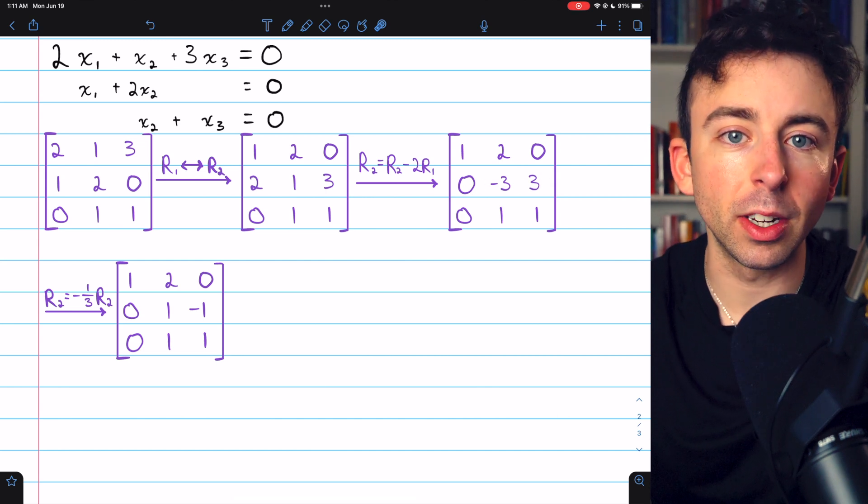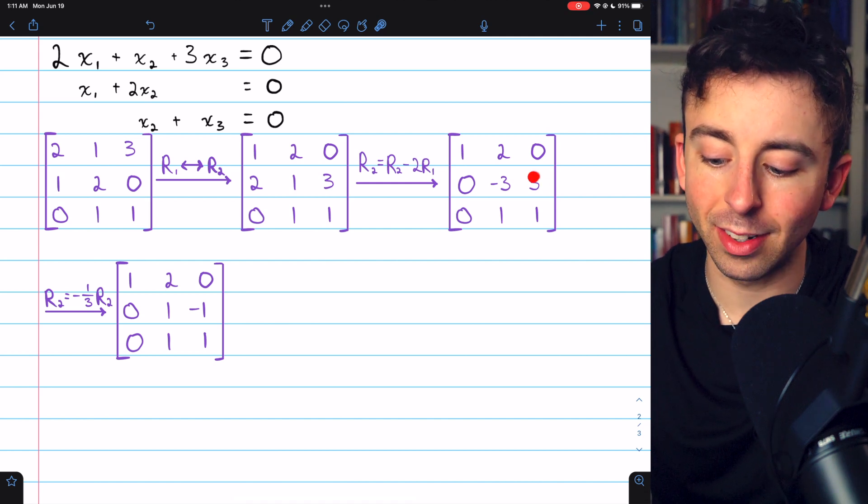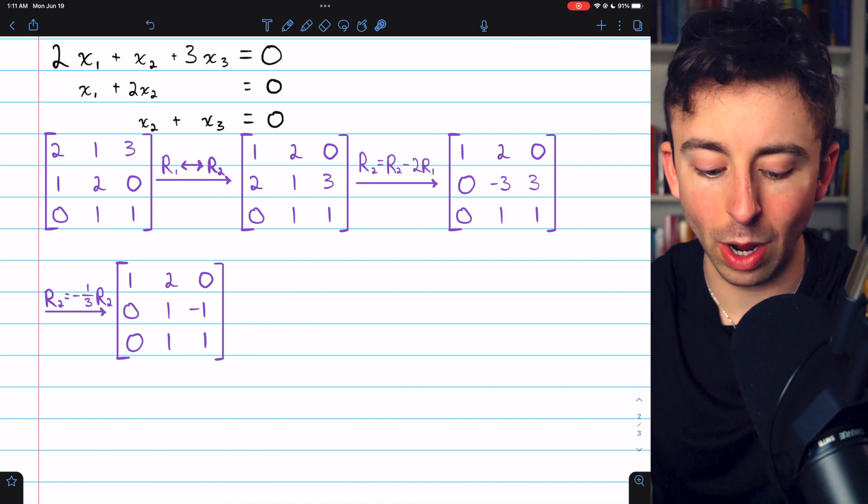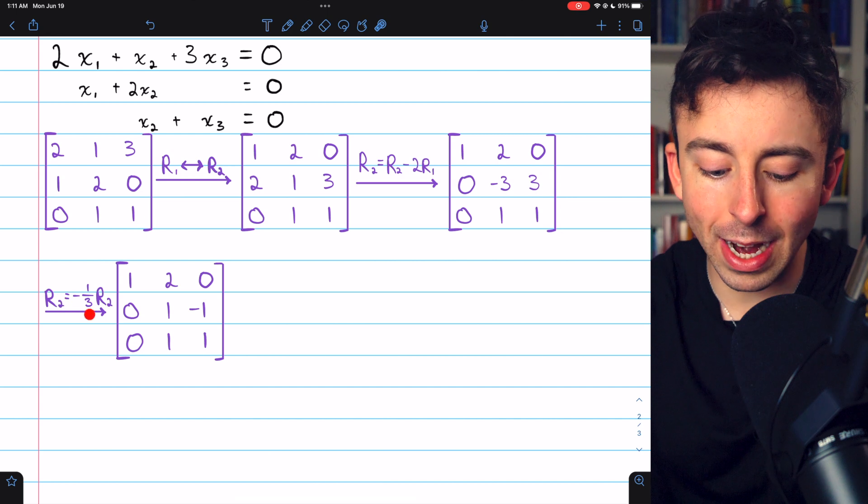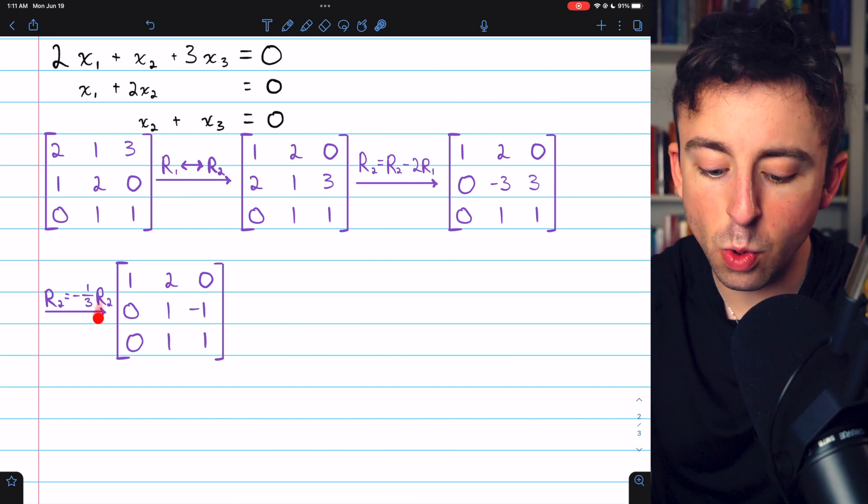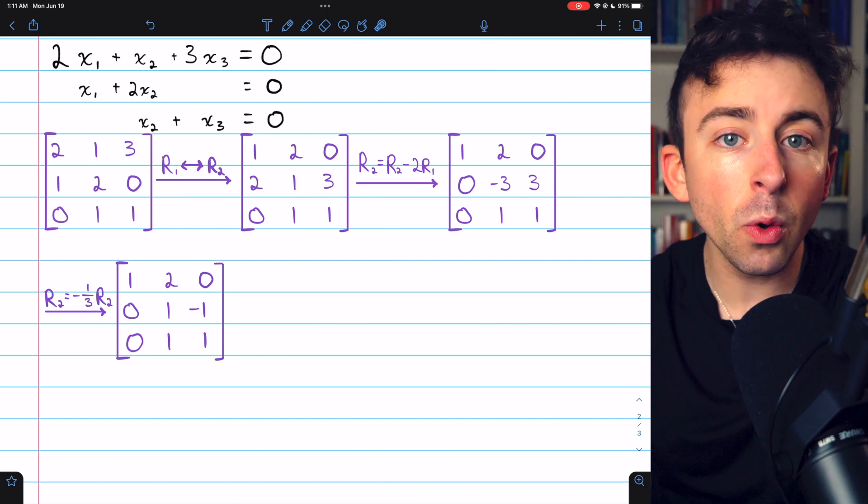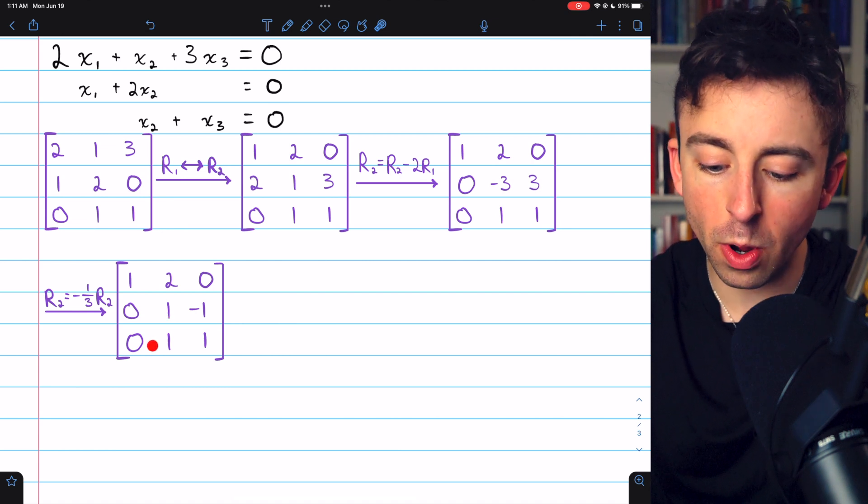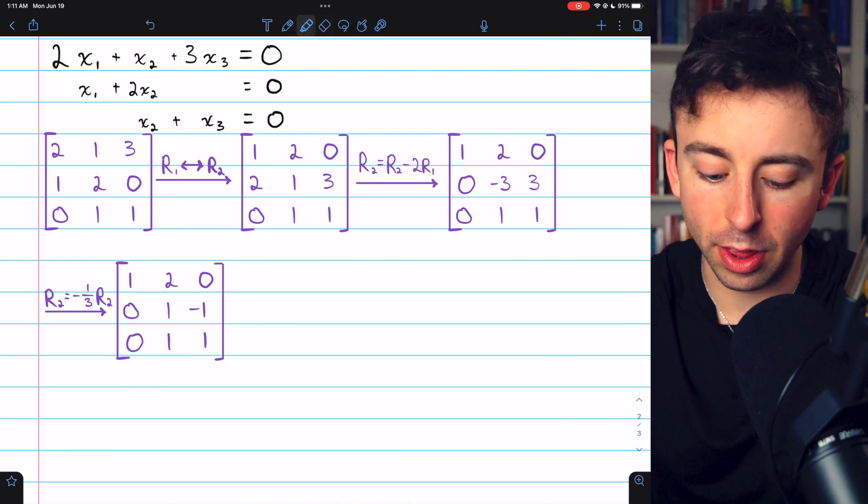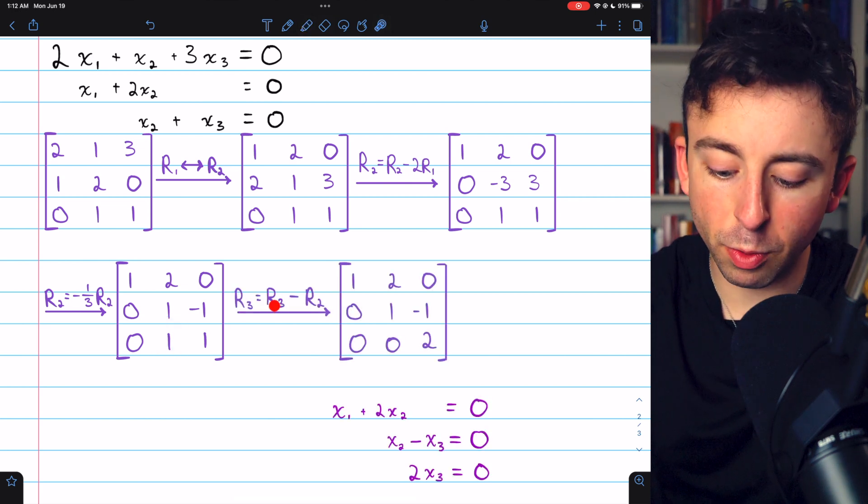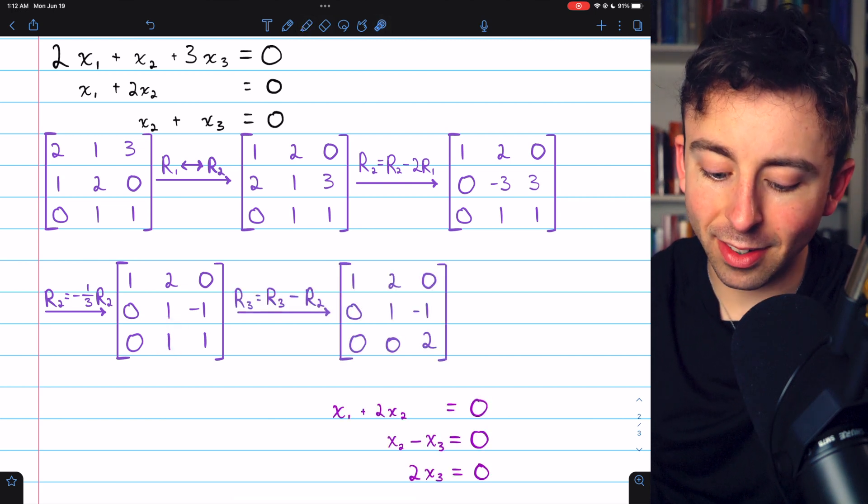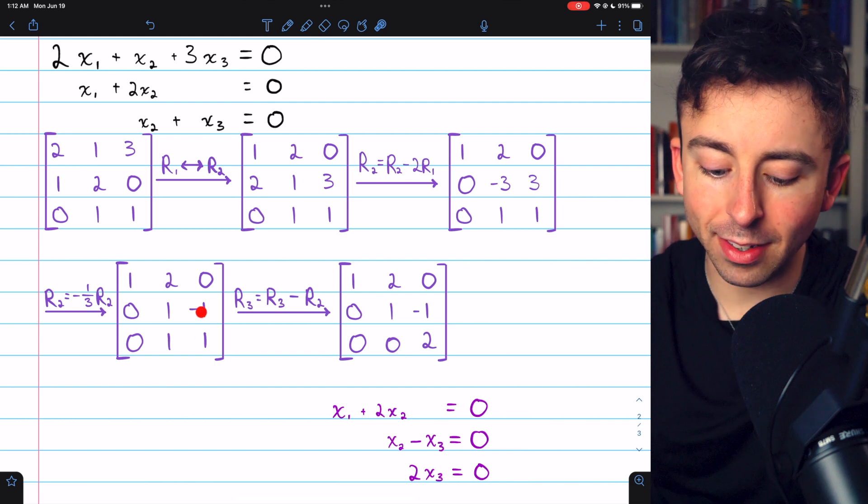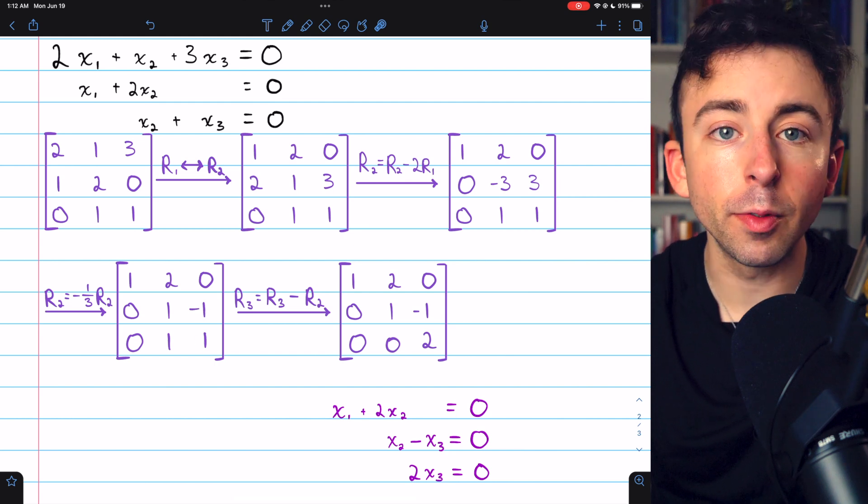Multiplying row 2 by negative 1 third gets us to this matrix here. Now, we can simply subtract row 2 from row 3 in order to turn this 1 into a 0. So we do row 3 minus row 2. That gets a 0 there. And then 1 minus negative 1 is positive 2.